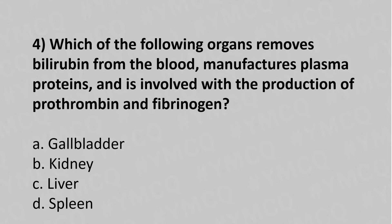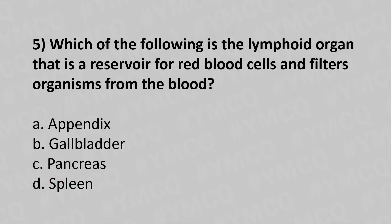Now let's move to question number four: Which of the following organ removes bilirubin from the blood, manufactures blood plasma, and is involved in the production of prothrombin and fibrinogen? Option A: gallbladder. Option B: kidney. Option C: liver. Option D: spleen. The answer is Option D: spleen.